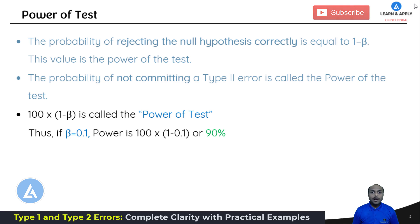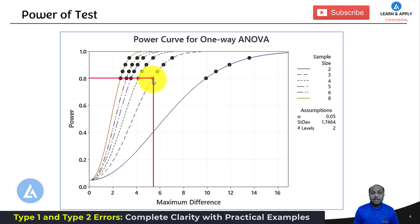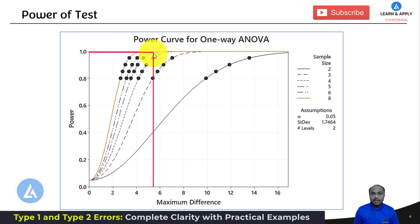Let's understand the impact of increasing the sample size on the power of the test. If we increase the sample size, the power of the test increases. For sample size 3, to detect a difference of 5, we have a power of 0.8, that is 80%. If we increase the sample size from 3 to 4, the power of our test will be 0.95. If we further increase the sample size, the power of the test increases to 0.98. So as we increase the sample size, the power of the test increases.